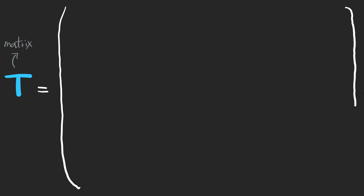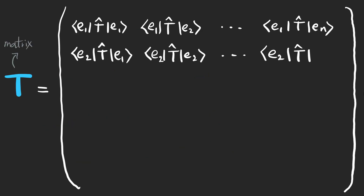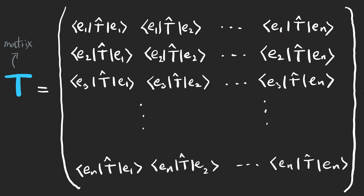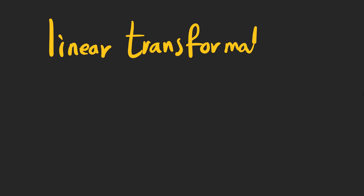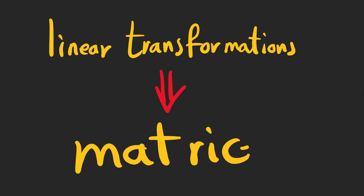We can write a matrix for this orthonormal basis, which is a representation of the linear transformation in that basis. So if you want to know how linear transformations work, all you need to do is get familiar with matrices.